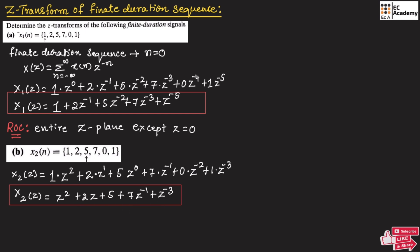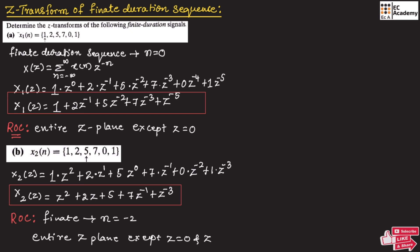The ROC for this sequence is the entire Z-plane except Z=0 and Z=infinity, since the sequence is finite and starts at n=-2. When the sequence starts from n=0, the ROC is the entire Z-plane except Z=0. When the sequence starts from a negative value of n, the ROC is the entire Z-plane except Z=0 and infinity.